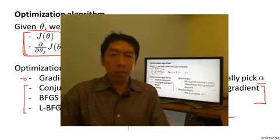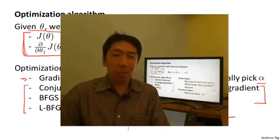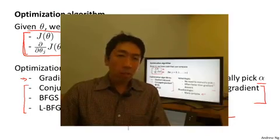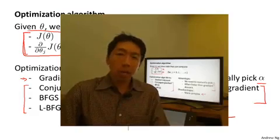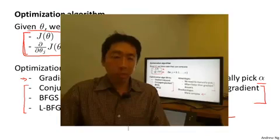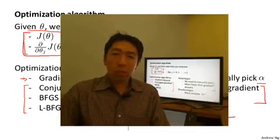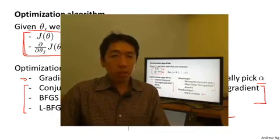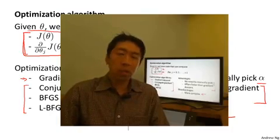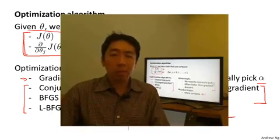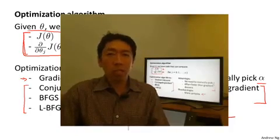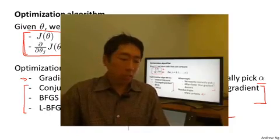To take a square root, what all of us do is use some function that someone else has written to compute the square roots of our numbers. Fortunately, Octave and the closely related language MATLAB have a pretty reasonable library implementing some of these advanced optimization algorithms. So if you just use the built-in library, you get pretty good results. I should say there is a difference between good and bad implementations of these algorithms. So if you're using a different language for your machine learning application — like C, C++, Java, and so on — you might want to try out a couple of different libraries to make sure that you find a good library for implementing these algorithms, because there is a difference in performance between a good implementation of conjugate gradient or L-BFGS versus a less good implementation.